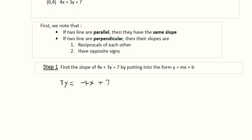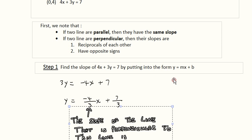Then we're going to divide everything by 3, and that gives us y is equal to negative 4 over 3x plus 7 over 3. Now it's in that form.